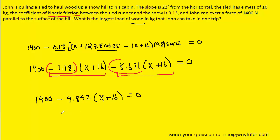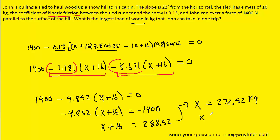Why don't we go ahead and subtract the 1400 over to the other side. And so when we do that we're going to have negative 1400 over here. We'll divide both sides by the negative 4.852. We get 288.52. And then finally we can subtract 16 from both sides. And when we do that we get about 272.52. And that'll be in kilograms. And if you want, you can round that to 273. So this would be the correct answer to the question.